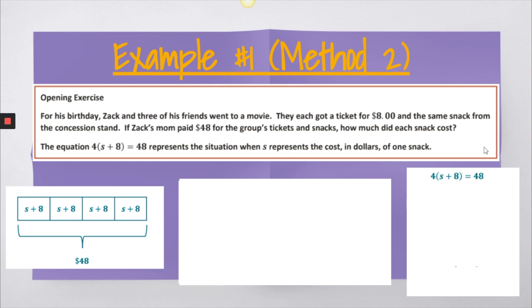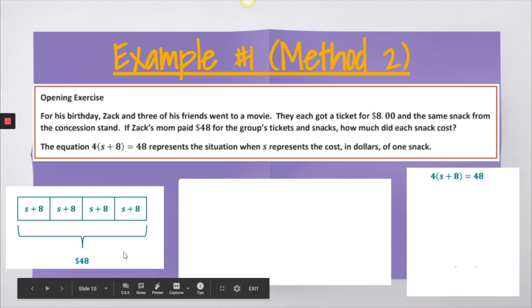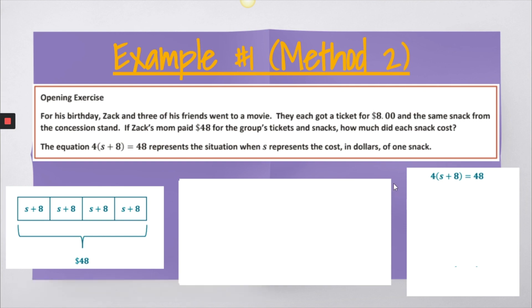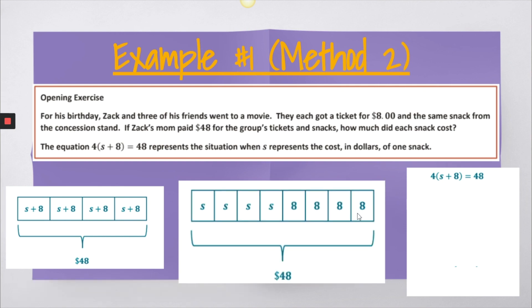Same example, but a different method because different students see things differently. Some of your students who are visual, they may prefer this model. Whereas some of them are more algebraic, they may prefer the next one. So let's take a look at an alternate way of seeing this. Some of your students might have just said snack and a snack and a snack and a snack plus the $8 for each person to get in.